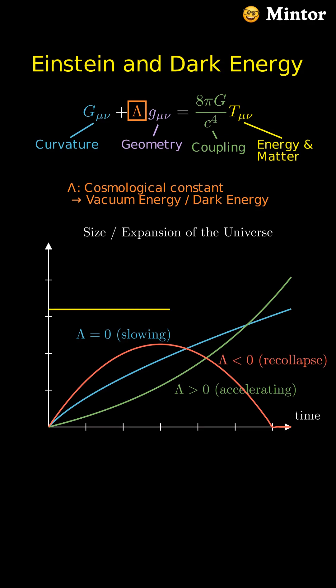Einstein first introduced lambda to keep the universe static, because at that time people did not know about the expansion of the universe and the Big Bang. Later Einstein called this his biggest blunder.